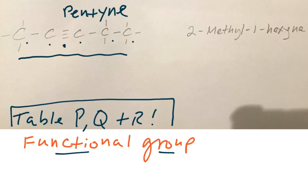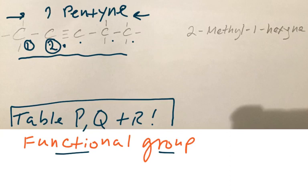Now we have to indicate the lowest number in terms of that triple bond. Let's try from left to right, and from right to left, and see which one gives us the lowest number. If we come from left to right, carbon number one is there, carbon number two there, and that's where the triple bond is coming out of. So we simply call this guy 2-pentyne, and you're done. Pent — five carbons, YN triple bond, the triple bond is at carbon number two.